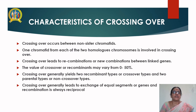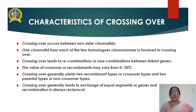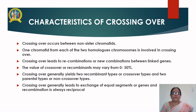Let us see the significant characteristics of crossing over. Crossing over occurs only between the non-sister chromatids. One chromatid from each of the two homologous chromosomes is involved. Crossing over leads to recombinations or new combinations between the linked genes. The value of crossover or recombinant may vary from 0% to 50%. Crossing over generally yields two recombinant types and two parental or non-crossover types.